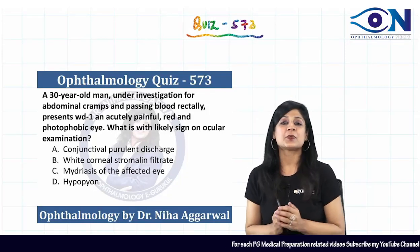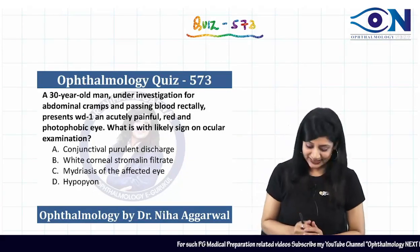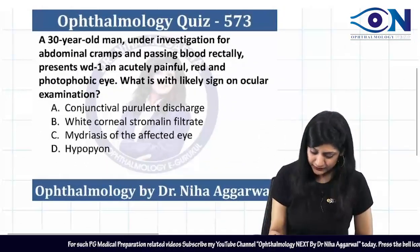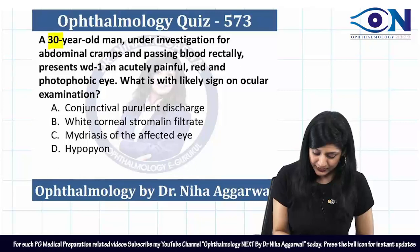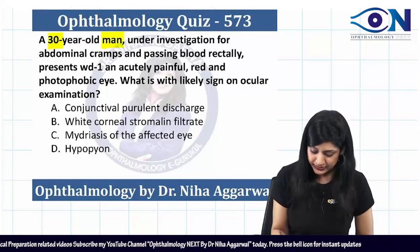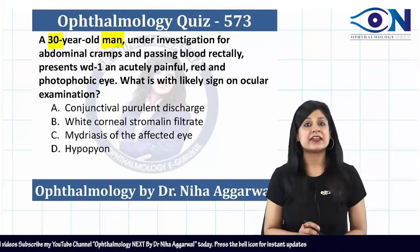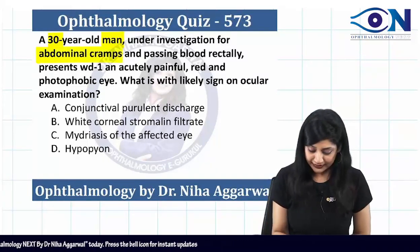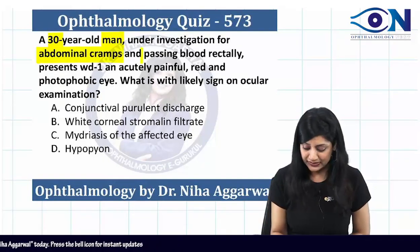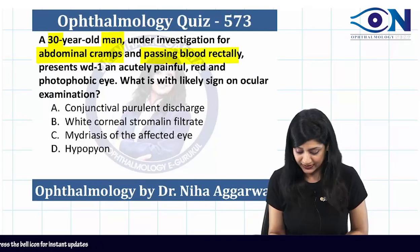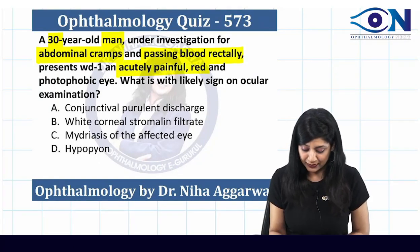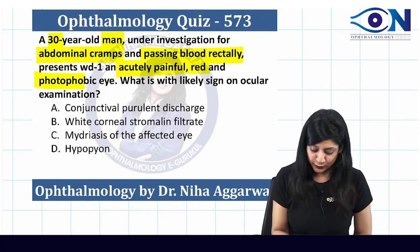Hello guys, this is quiz number 573. We have a man who is 30 years old, under investigation for abdominal cramps, passing blood rectally, with an acute painful red and photophobic eye. What is the likely sign?